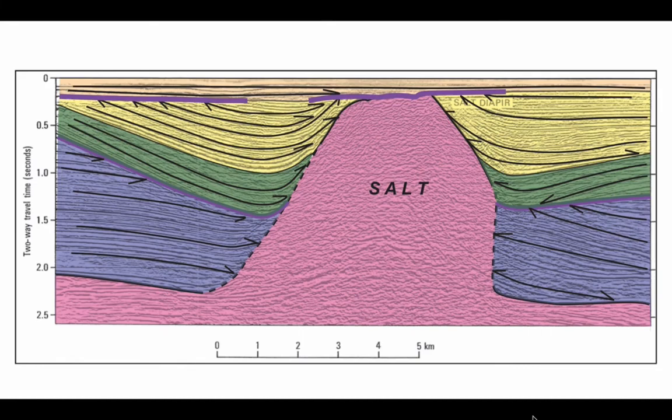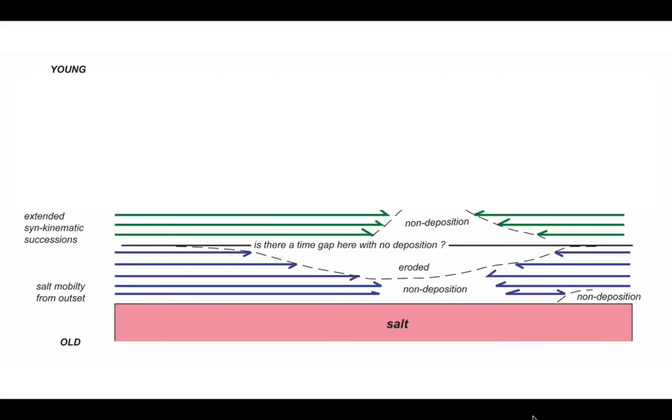Return to the seismic and our interpretation. Now we'll put on the green unit which laps against the salt and actually onlaps the unconformity on the right hand side, and those onlaps represent non-deposition against the salt body. It looks like it's a synchronic succession.